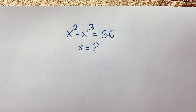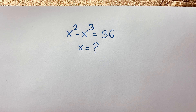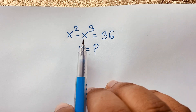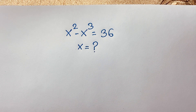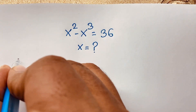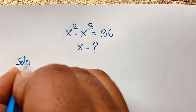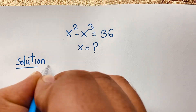Welcome to Russia's Classroom. Today we are solving a nice exponential equation — a German Maths Olympiad question: x² minus x³ is equal to 36. We'll find out the value of x in this Maths Olympiad question. I will solve this step by step.